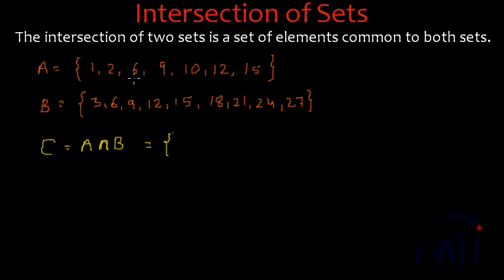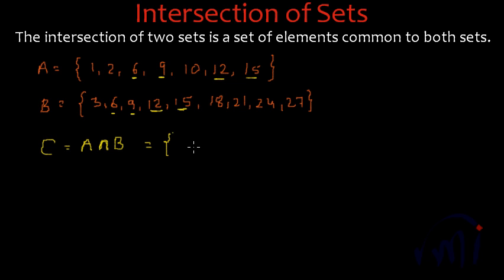So here if we see, we have a 6 in set A and we have a 6 in set B. We have a 9 in set A and we have a 9 in set B. Then we have 12 over here and we have a 12 in set B. Then 15 is there and 15 is here also. So these are the 4 elements which are common in both set A and B, and all these 4 elements will be part of their intersection set.